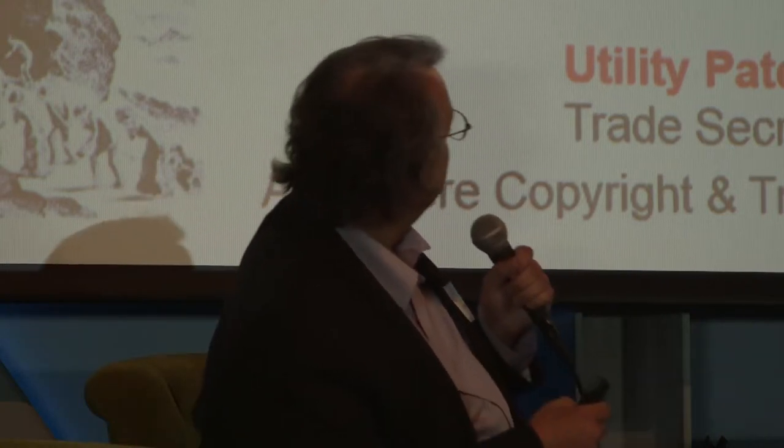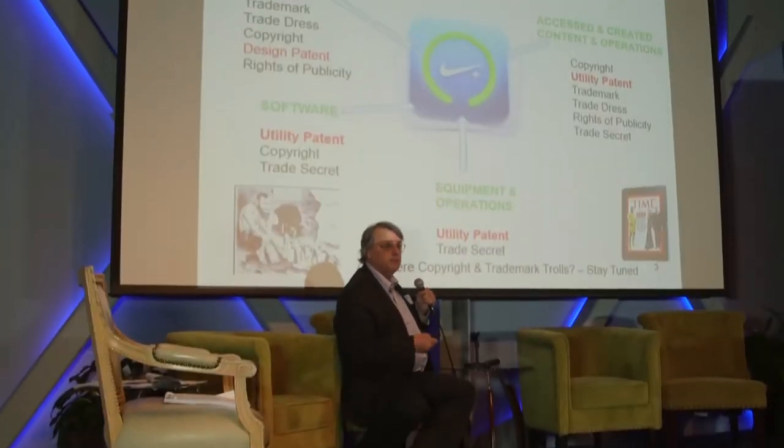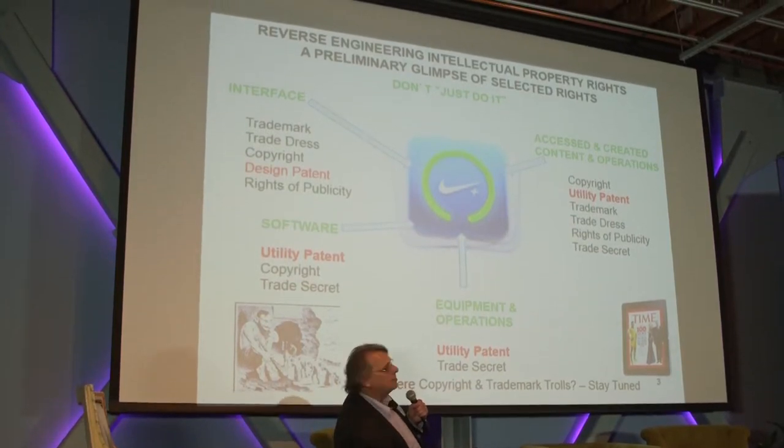We're going to start unpacking what that means. But first, I want to show you something very important. I used to be in-house at DuPont in their petrochemicals and engineering division, where I learned to reverse engineer products and services. This chart shows some of the intellectual property rights that apply to your creations as developers. At the top level we have trademark, trade dress, copyright, design patent, and potentially rights of publicity.